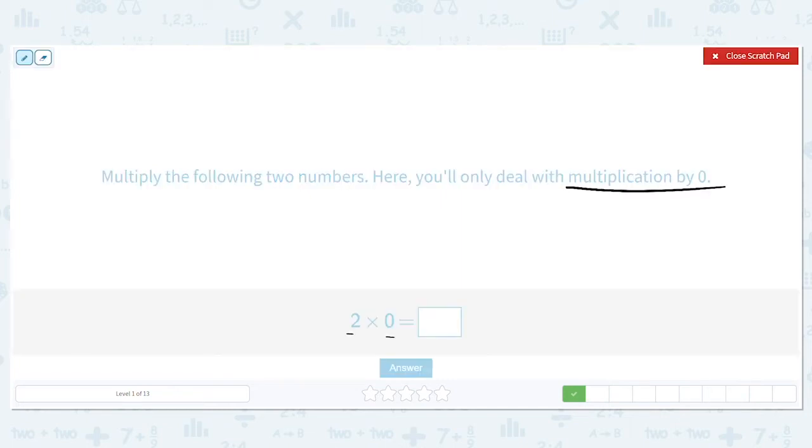Again, we're only dealing with zeros, so this time I have two times zero. Okay, that's like saying I have two groups and I have nothing.